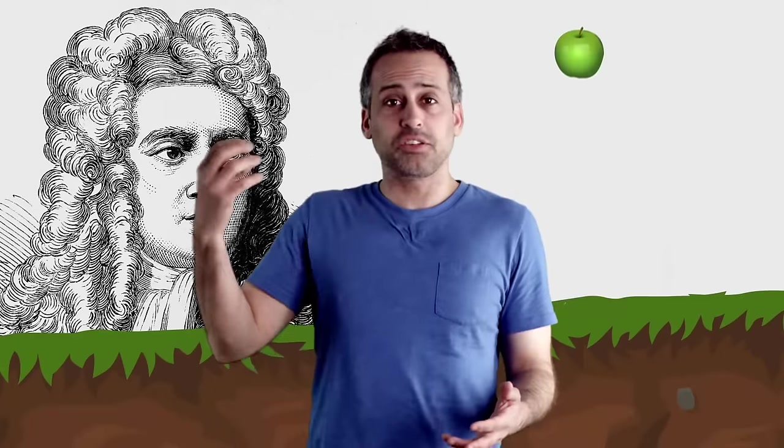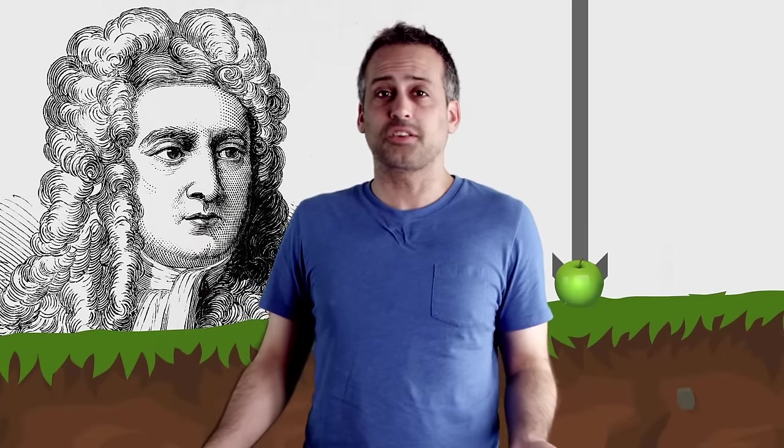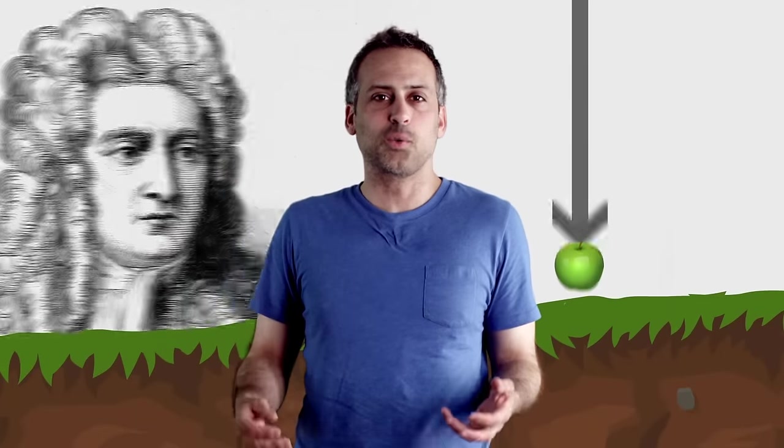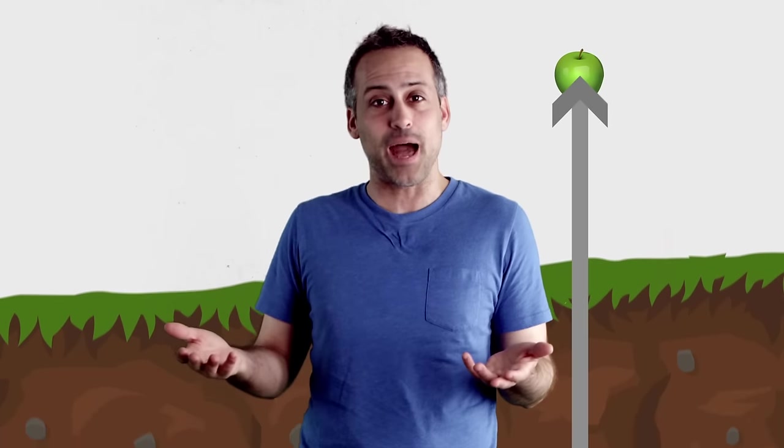Isaac Newton said that an apple falls because a gravitational force accelerates it toward the ground. But what if it's really the ground accelerating up to meet the apple?